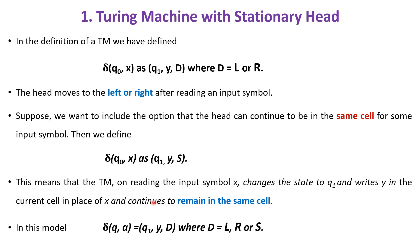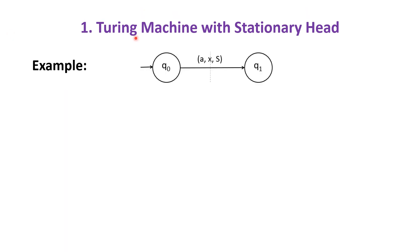In this model of Turing machine with stationary head, in the direction, we will be having three options: left, right, or same. Let us see an example of Turing machine with stationary head.